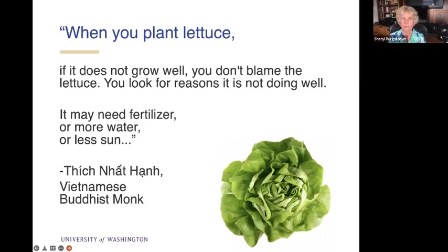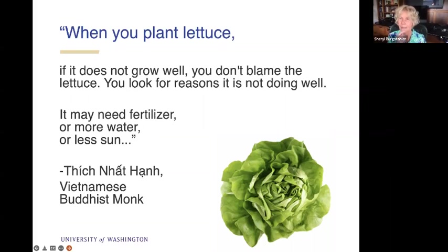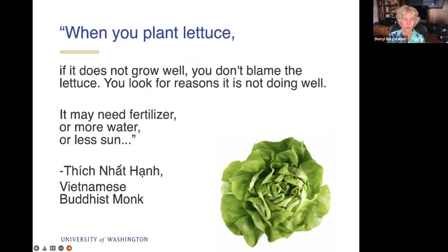I ran into this quote from a Vietnamese Buddhist monk that reminded me of universal design when I think about teaching: 'When you plant lettuce, if it does not grow well, you don't blame the lettuce. You look for reasons it's not doing well — may need fertilizer, might need more water, might need less sun.' With students as well, if they're not doing well, think about what we can do differently. I do this with my assignments — if someone has a question, I reflect on what was confusing and whether I can tweak it. That really helps students with executive functioning issues and students on the autism spectrum who need concrete instructions.